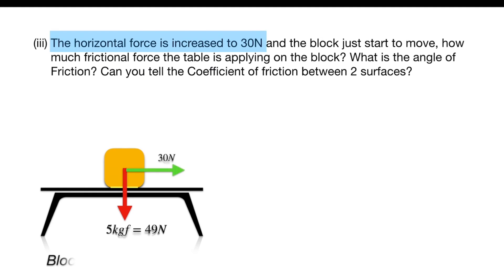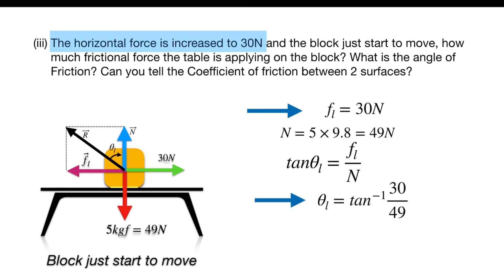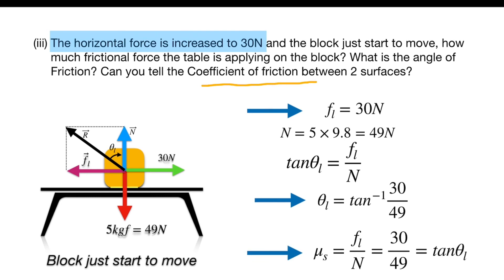Case 3: The horizontal force is increased to 30 N and the block just starts to move. Since the block is still just at rest, the limiting frictional force equals the applied force of 30 N. The limiting angle of friction is tan inverse of 30 over 49. Now we can find the coefficient of static friction because the frictional force is the limiting value: μs equals limiting friction divided by normal force, which equals tan θl.